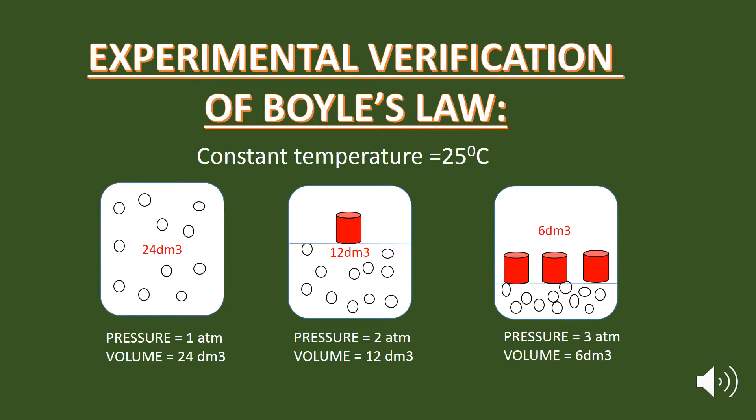Simply, we can say that when the pressure on the gas is low, the gas particles move freely and the volume is very high. When the pressure on the gas is increased, the gas particles squeeze to a much smaller area — here the pressure is much high and the volume is very low. So as the pressure goes up, the volume goes down. It means that there is an inverse relationship between the pressure and volume.